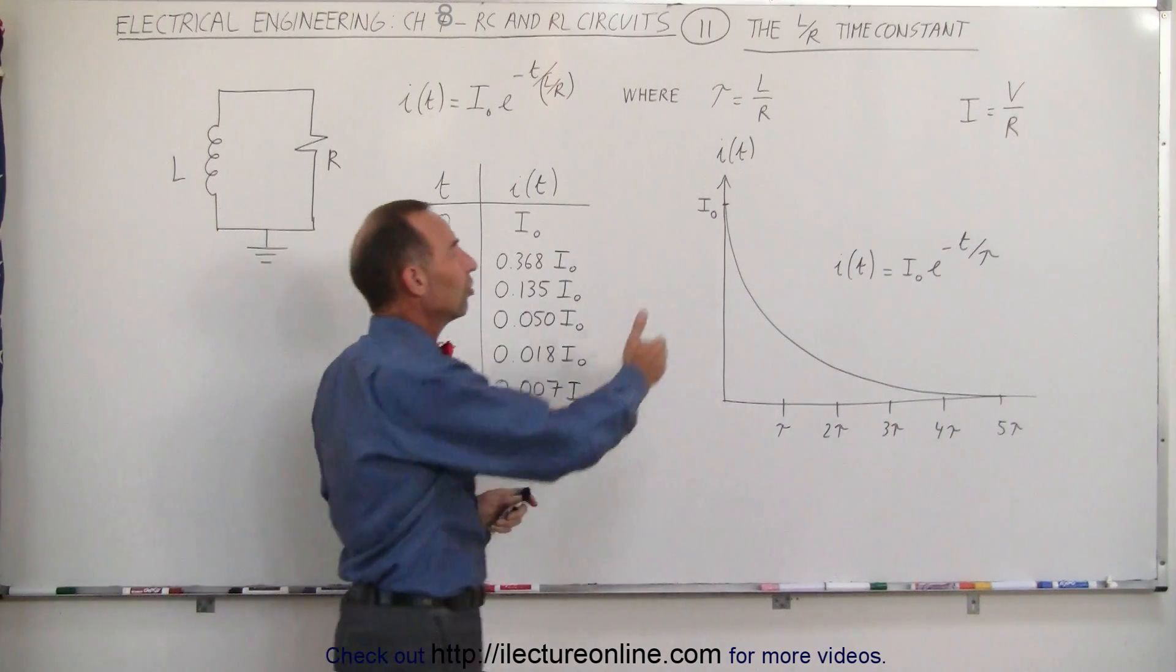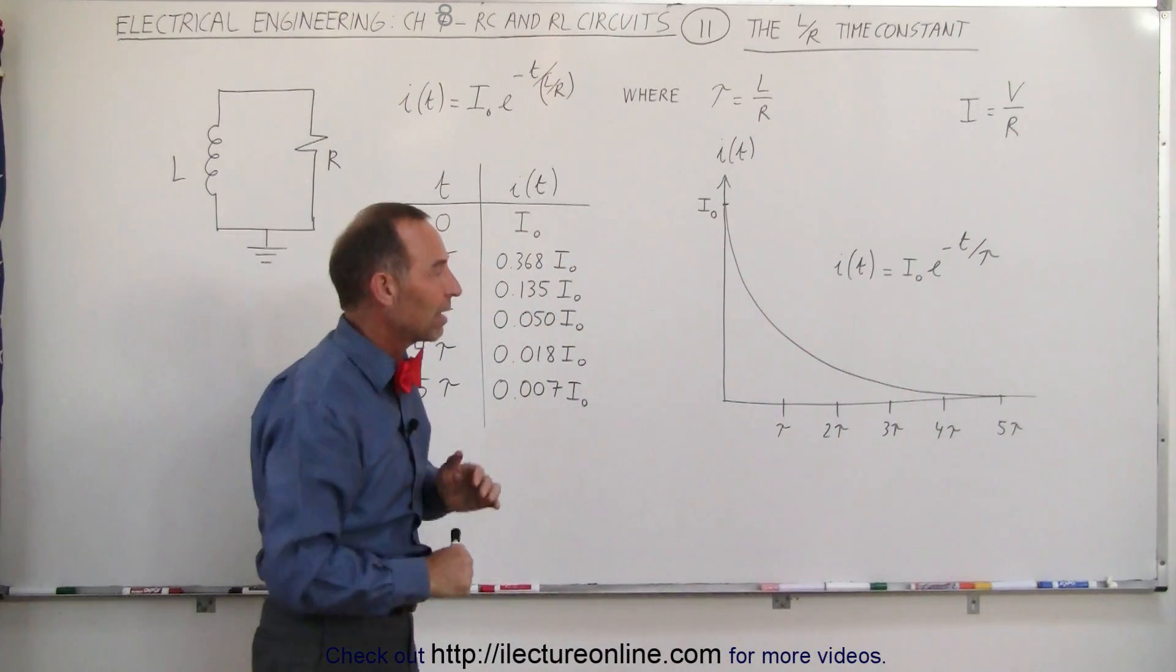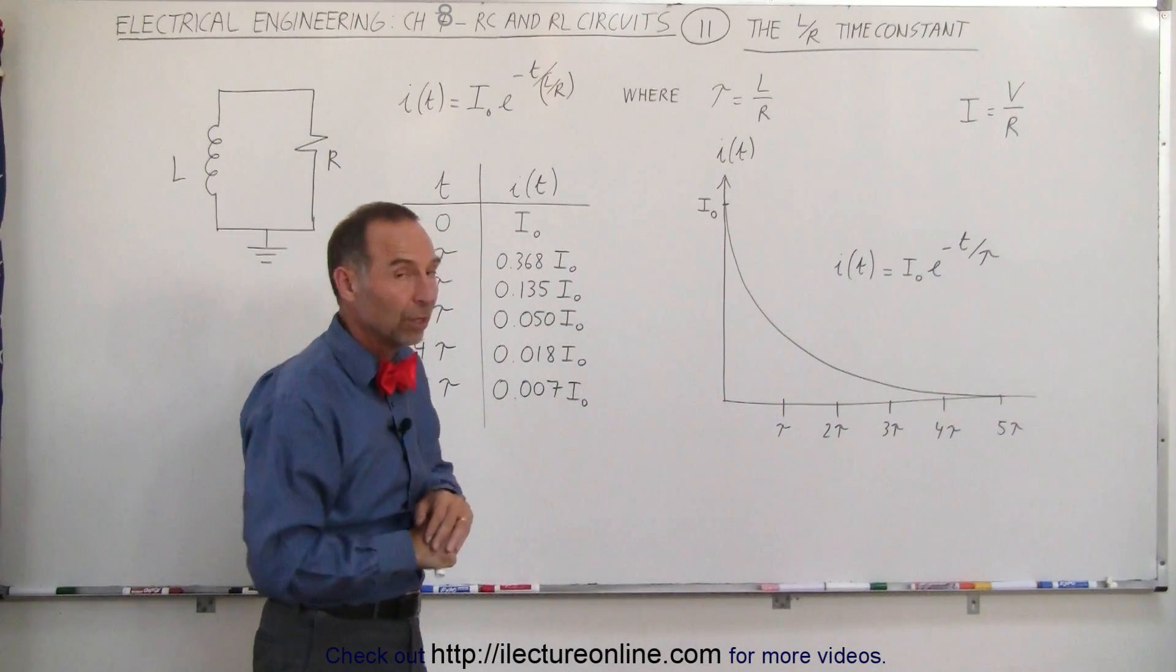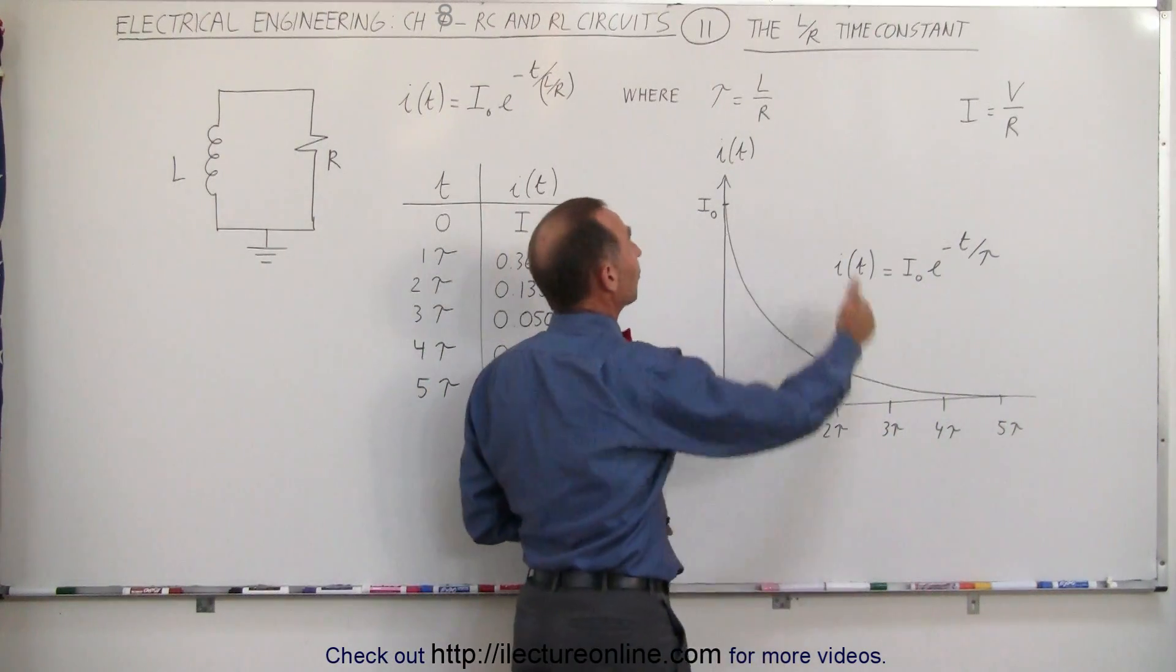So the current diminishes in an exponential form, just like the voltage diminished across the capacitor in an RC circuit. We can say that after five time constants, whatever those are.